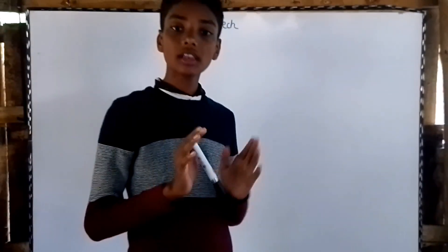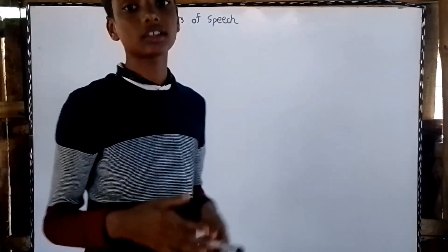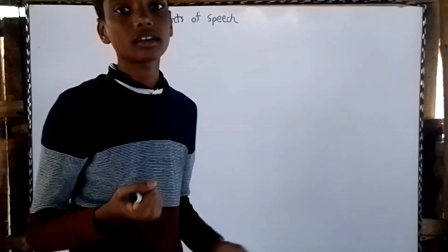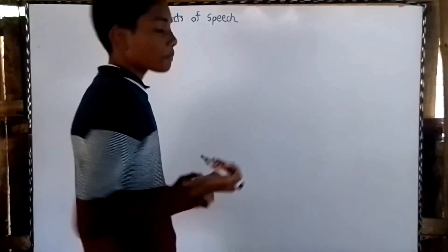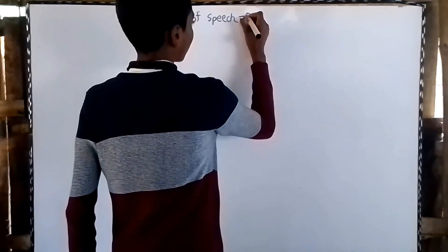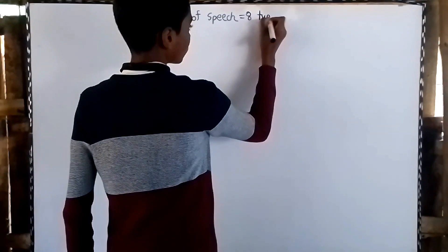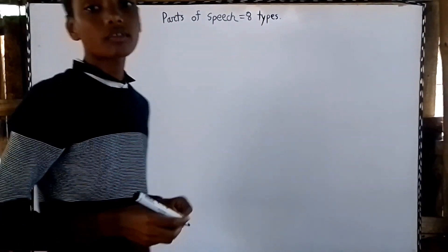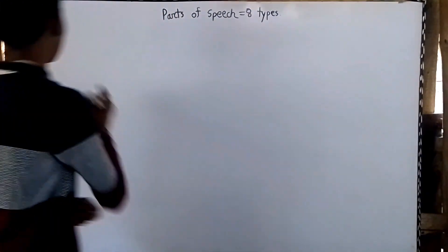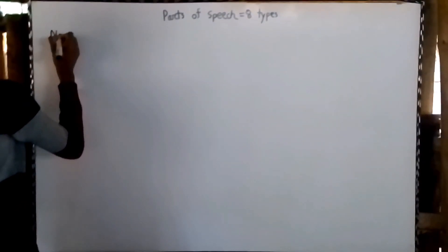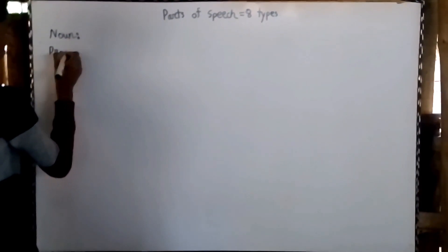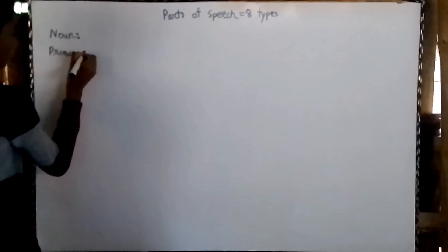If you concentrate, then we will understand this and it will be easier for you. So first we shall know how many parts of speech there are and what they are. Parts of speech are of eight types: noun, pronoun, verb, adverb, adjective, preposition, conjunction, and interjection.